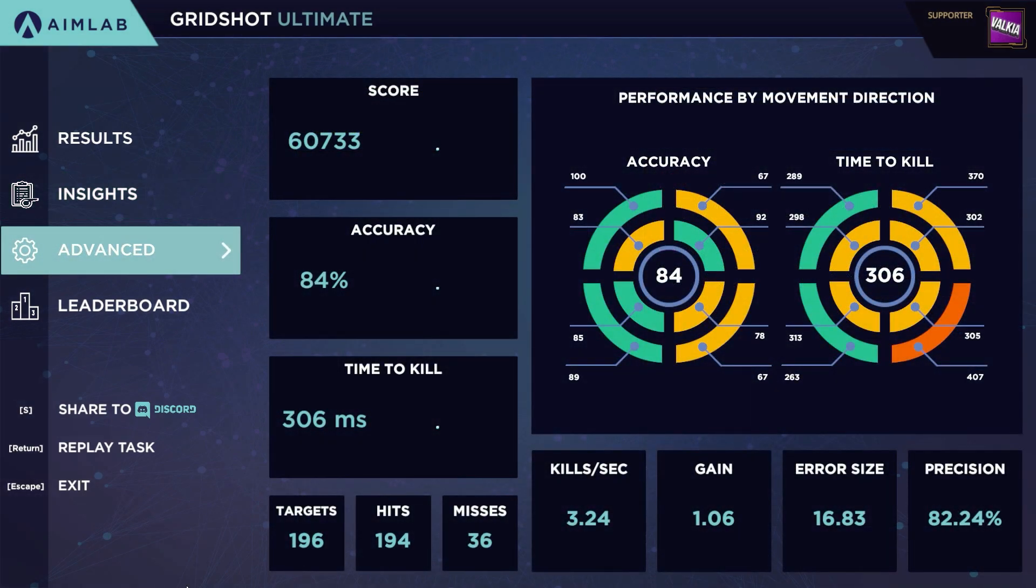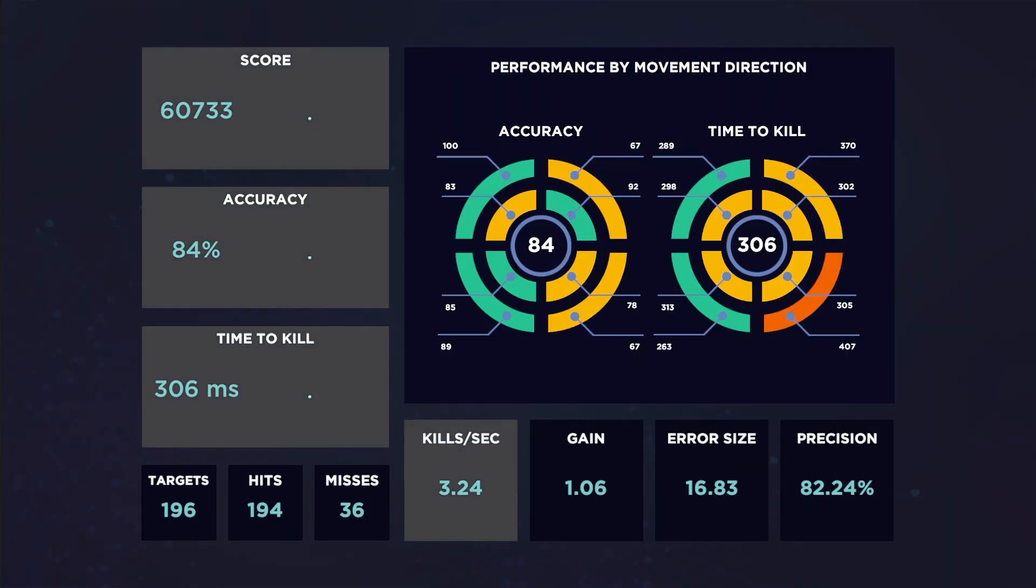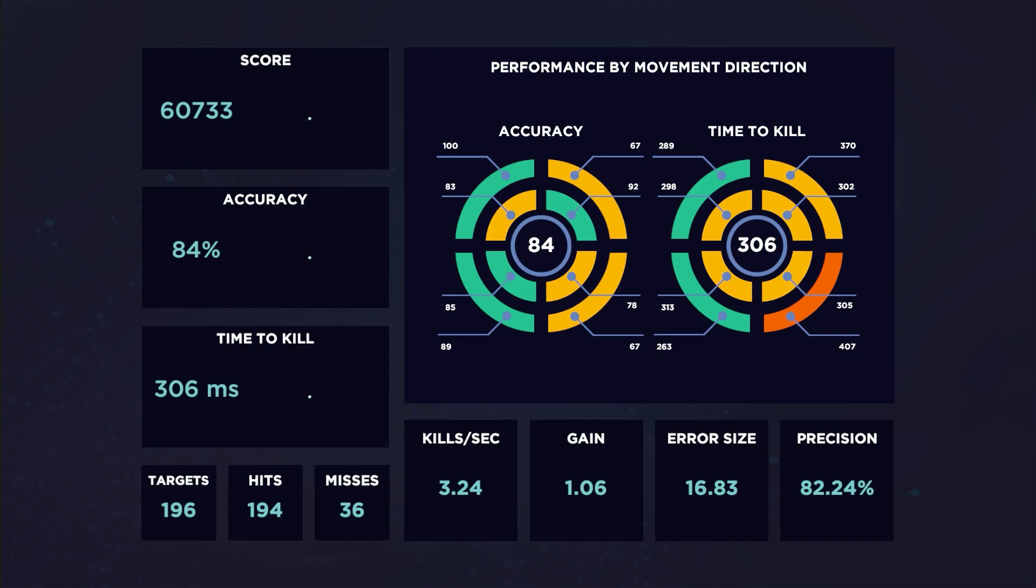The advanced tab dives deeper into more specific details of the task run. We've already covered score, accuracy, time to kill, and kills per second, but we also go into other attributes including total targets destroyed, total hits, and total misses.